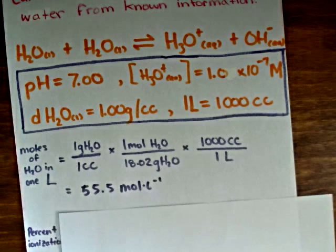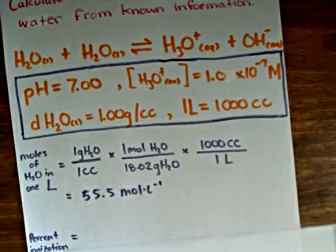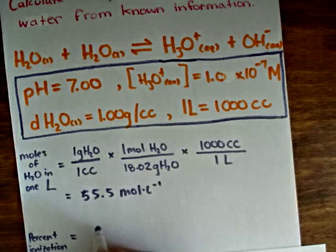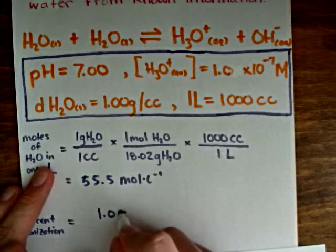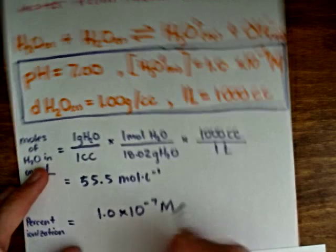Now, with that value, we can very easily calculate percent ionization. Percent ionization will be equal to the concentration of the hydronium ion, 1.0 times 10 to the negative 7 moles per liter,